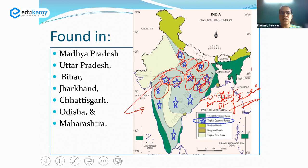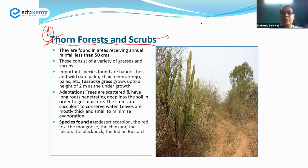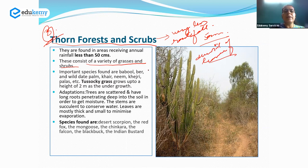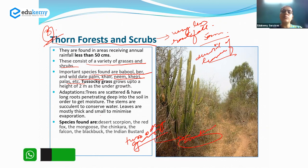The third category of natural vegetation in India are the thorny forests and scrubs. As the name suggests, they are found in areas with very less rainfall, less than 50 to 70 centimeters. These consist of a variety of grasses and shrubs that are generally devoid of leaves, or the leaves have been modified into thick forms to avoid evaporation of water. Some important species found include babool, baer, wild date palm, khair, neem, hejri, and palas. Tussock grass also grows as undergrowth, generally reaching heights of one to two meters.